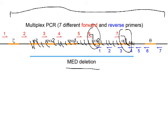Instead, a primer pair that gave no product with the normal alpha globin locus — forward two and reverse five — now gives a product. They were too far apart in the normal locus, but because all the information in the middle has been deleted, they are now close enough to each other and act as a suitable PCR primer pair. Since we know how big the Mediterranean deletion is, we can anticipate exactly how big the two-to-five product will be.